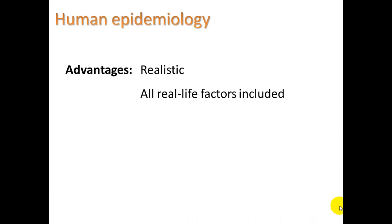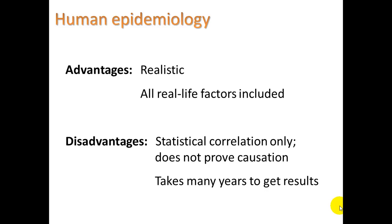Some advantages of these studies are that they are realistic and all real-life factors are included. But the disadvantage is that they have statistical correlation only — it does not prove causation. For example, knowing that people who work in felt factories are exposed to mercury and seem to be mentally affected doesn't necessarily prove it's the mercury. Maybe there's some other thing about their work environment causing it. Just because there's a correlation doesn't necessarily mean one is causing the other — they could both have some independent outside cause. And it can take a long time to get these results.